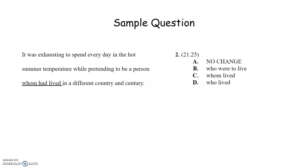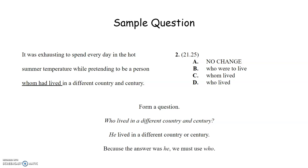Once you have resumed again, you will see the sentence reads, It was exhausting to spend every day in the hot summer temperature while pretending to be a person who had lived in a different country and century. Let's just do the same thing we've been doing since we started this video, form our question. Who lived in a different country and century? Also, side note, it doesn't matter whether the question that you form begins with who or whom. All that matters is the answer that you're going to get. We answer, who lived in a different country and century? Well, he lived in a different country or century. That doesn't end in an M, so we know that who is going to be correct in this sentence.